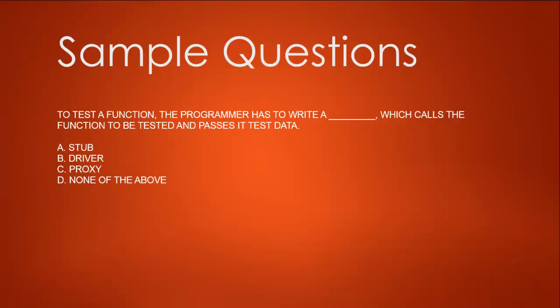For example, if you want to test your website but you want to emulate load, you use proxy users. You are not using the exact data or function — the proxy just emulates, so it doesn't call the function and pass its data. So stub is wrong, and none of the above is wrong as well. We are left with option B: driver calls the function to be tested and passes the data to it.